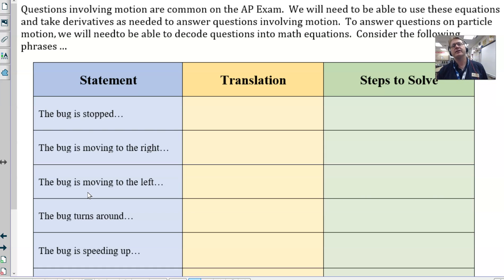So let's pretend that we have a bug that's moving along a straight line, an x-axis, a horizontal line. It's a lot more interesting when we talk about a bug moving than just say a particle moving. So if we have a situation where the bug is stopped, what does the bug is stopped really truly mean? Well, we know that means that the velocity of that bug, or v(t), we'll call it, is equal to zero. That's how you would translate. Now, what does that mean? How do you solve? Well, you would actually set whatever v(t) equation that you have. Maybe you have to find it. Maybe you have to take a derivative of position, but you would just set v(t) equal to zero and then solve for t.